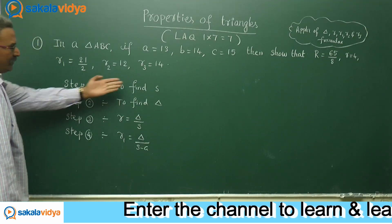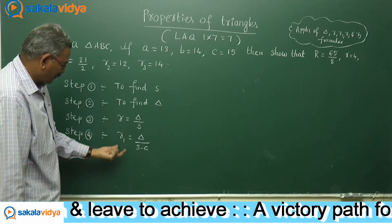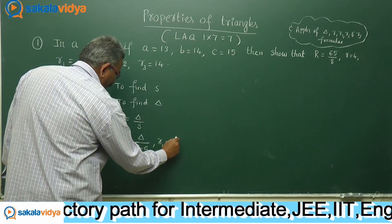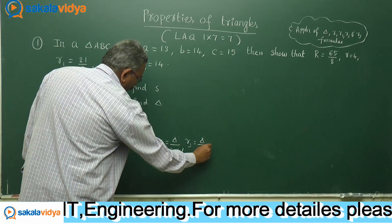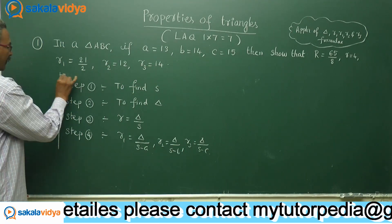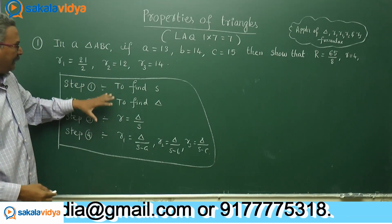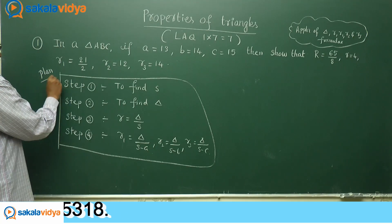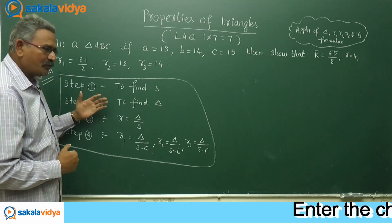S value is known in step 1 and A value is known. In step 2, we have the delta. So we can find out R1. In R2 also, we can write delta by S minus B. R3 is equal to delta by S minus C. You remember, this is the planning, it is a plan to solve this problem. Now, let us execute this plan.